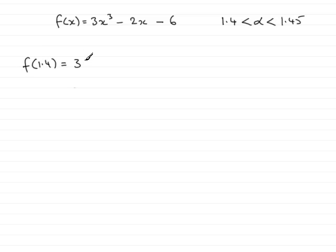So that's going to be 3 multiplied by 1.4 cubed minus 2 times 1.4 and then minus 6. And if you do that on the calculator what you get is minus 0.568.